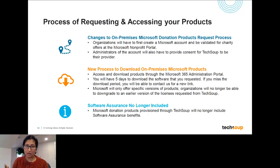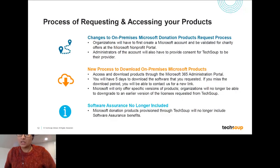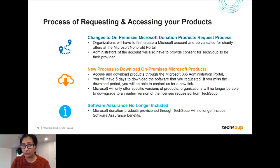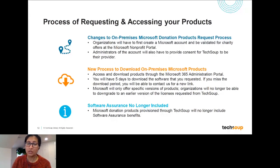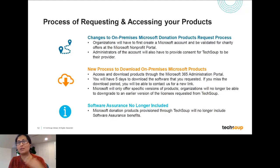Part of that retirement meant that the way we administer and deliver licenses to you also had to change. We've had a ton of questions about this and we're also learning through this process. We've learned a lot in the last couple of months on how to navigate these new systems and make sure you're set up and can get access to the licenses you need. The first thing you'll need is a Microsoft account. That Microsoft 365 administrative account is where you'll get your licenses from moving forward. Organizations need to create a Microsoft account and have it validated for charitable offers directly from Microsoft.